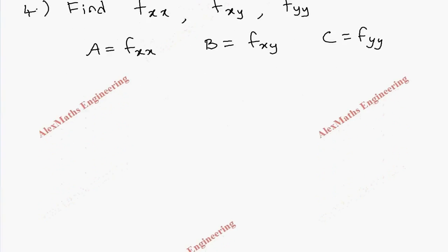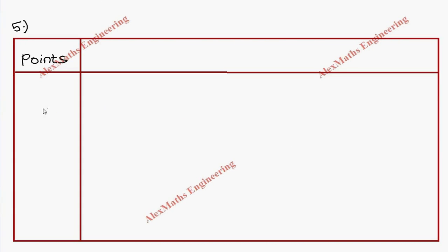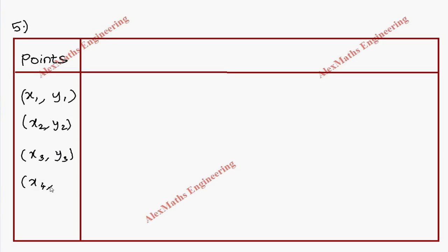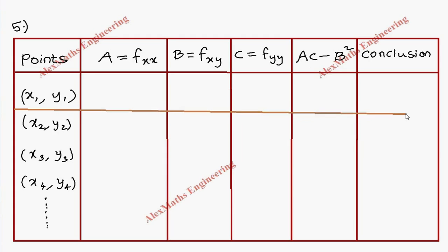As the next step, we make a tabular column. In the first column we write all the stationary points — x1,y1; x2,y2; x3,y3; x4,y4; and so on. For each point we find the value of A, then B, then C. Then we apply the condition AC minus B squared, where A is fxx, B is fxy, and C is fyy. Finally, we write the conclusion for each point.